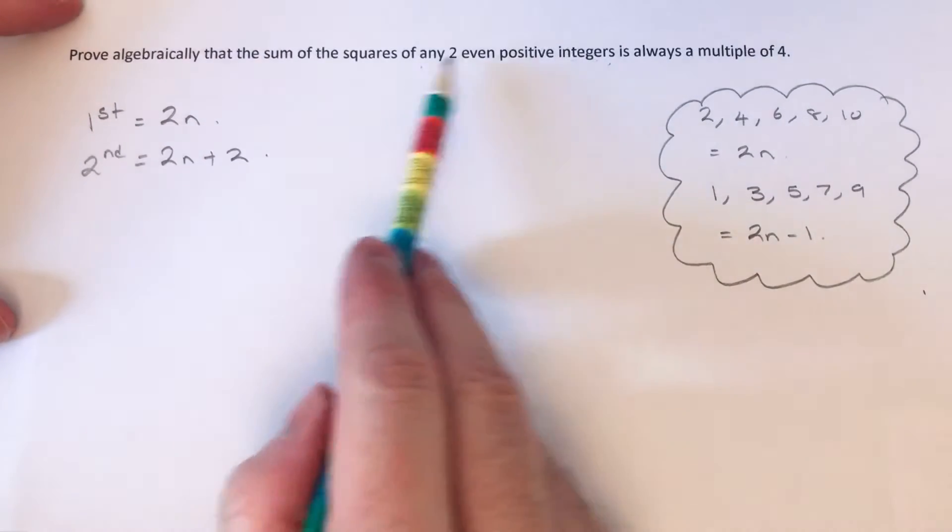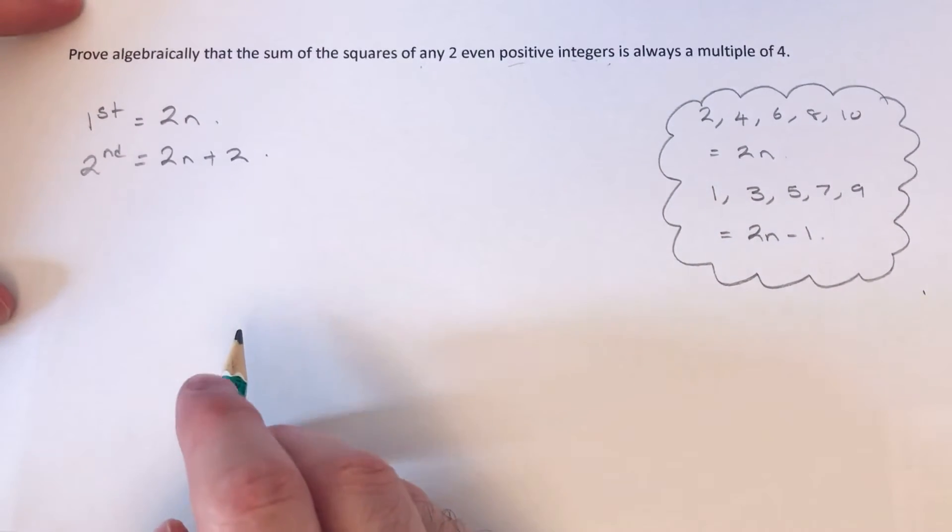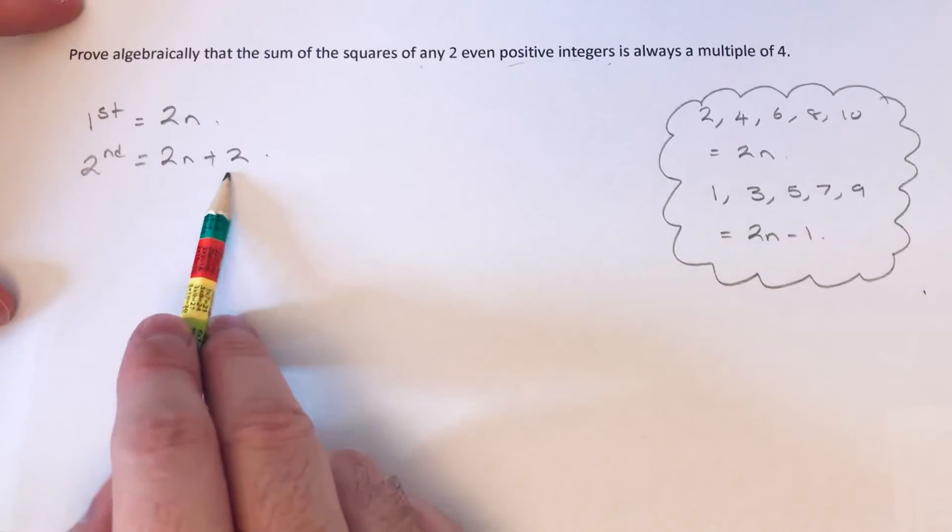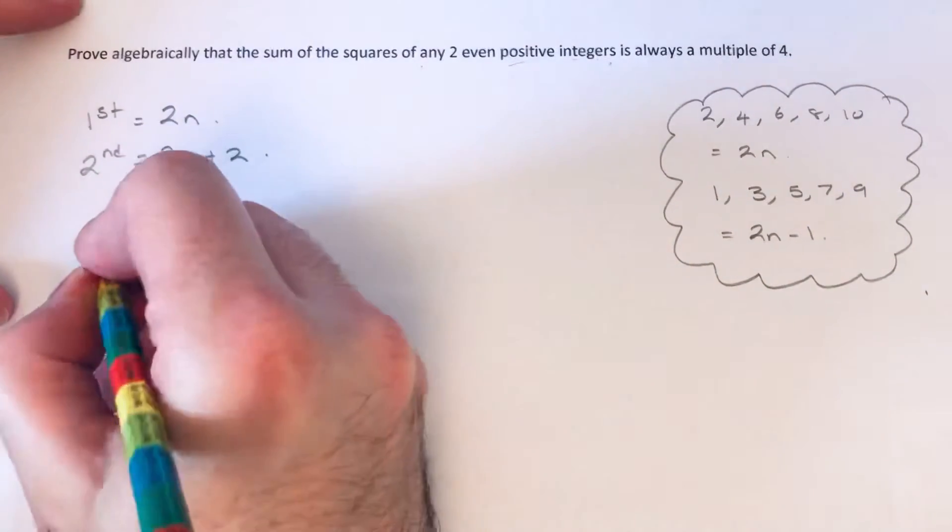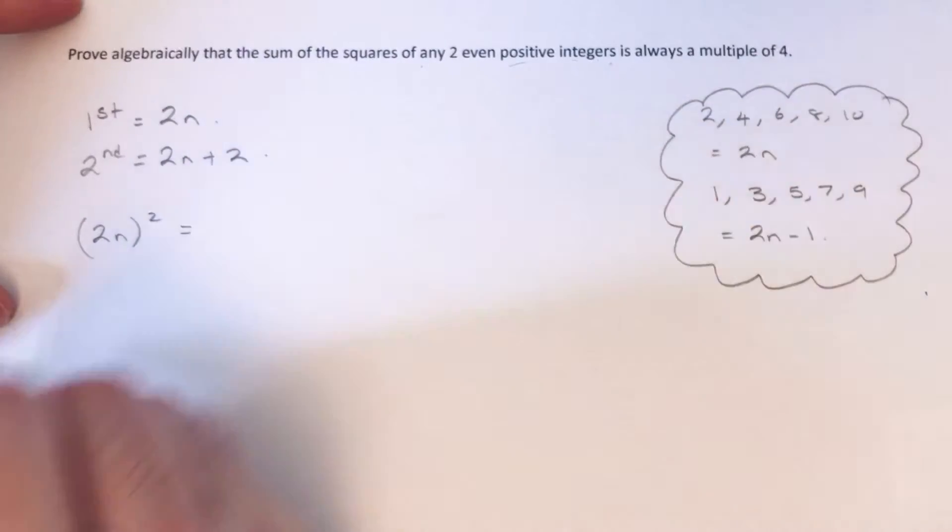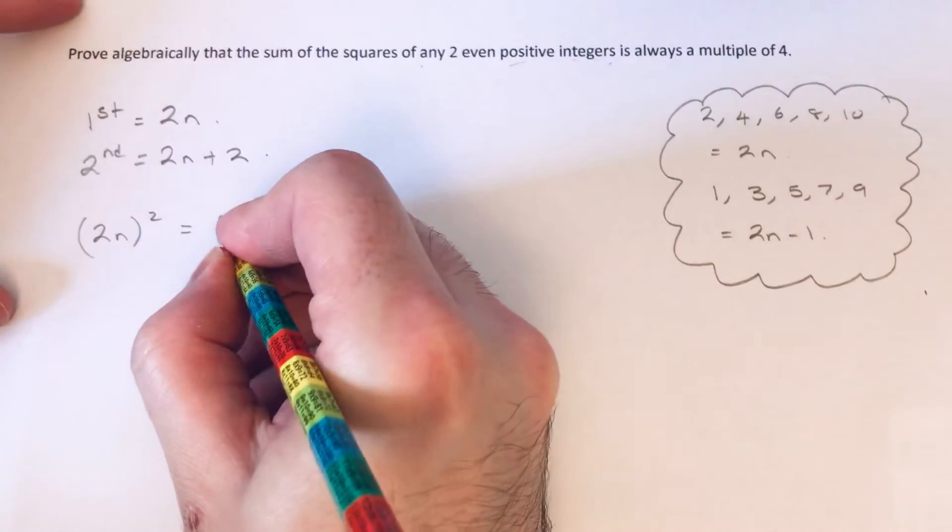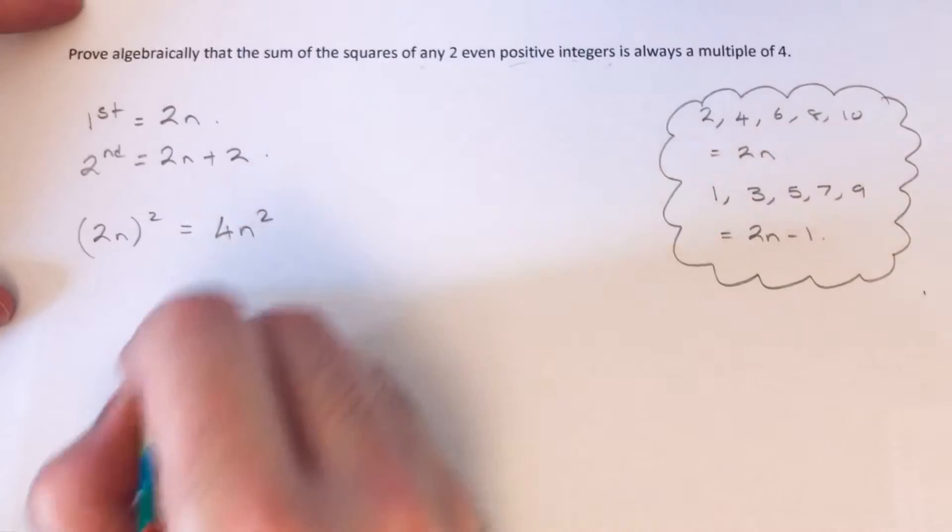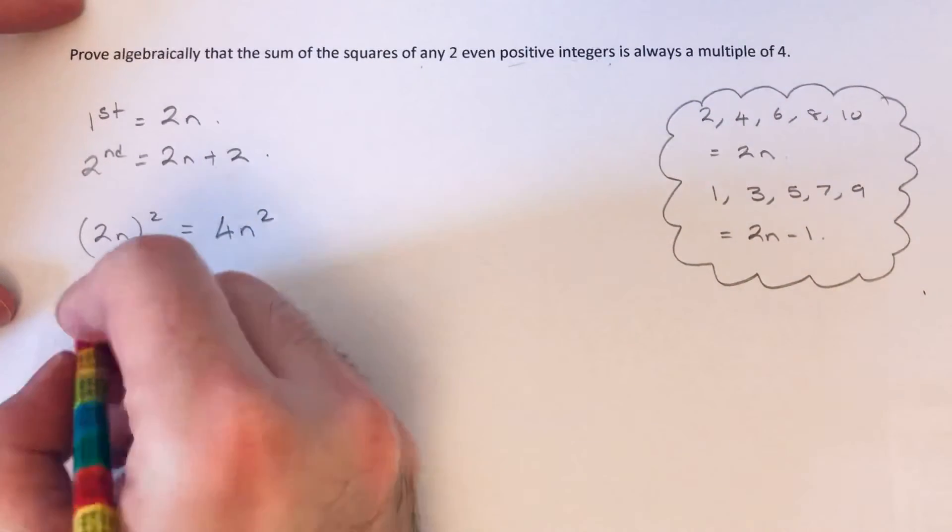So what we've got to do next is square these even integers. So if I square the first one, 2n squared, that will give me 4n² because it's 2n times 2n.